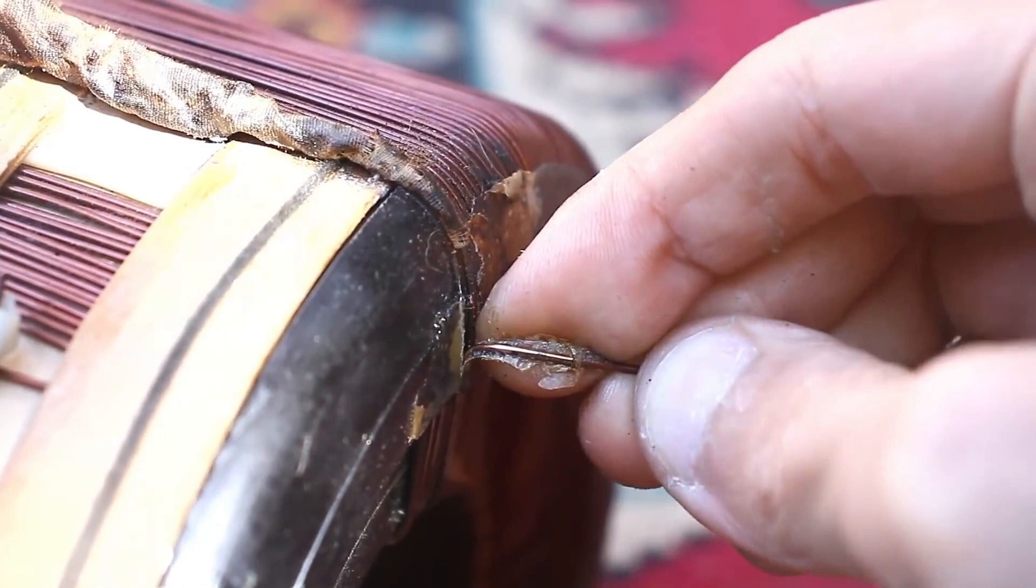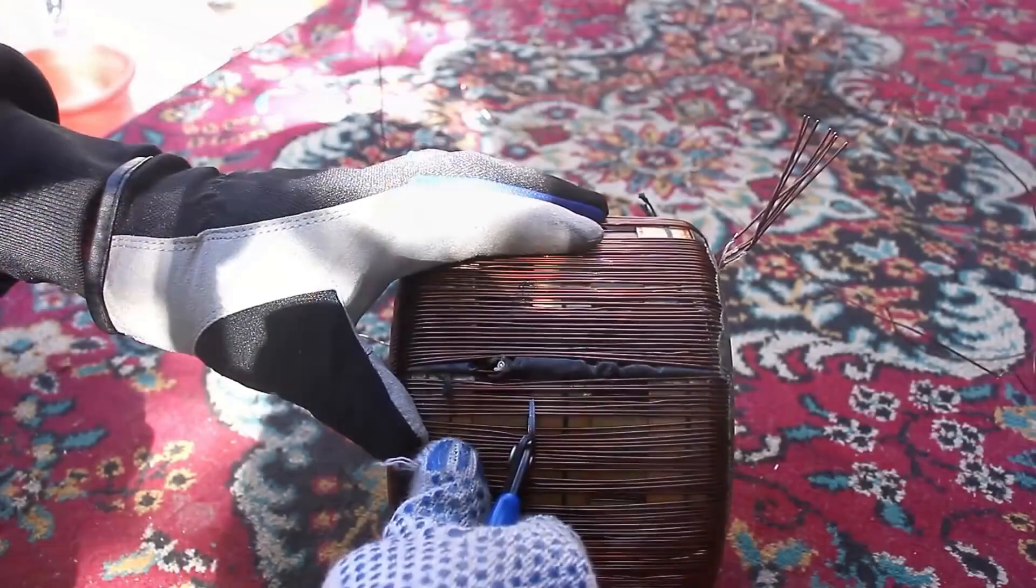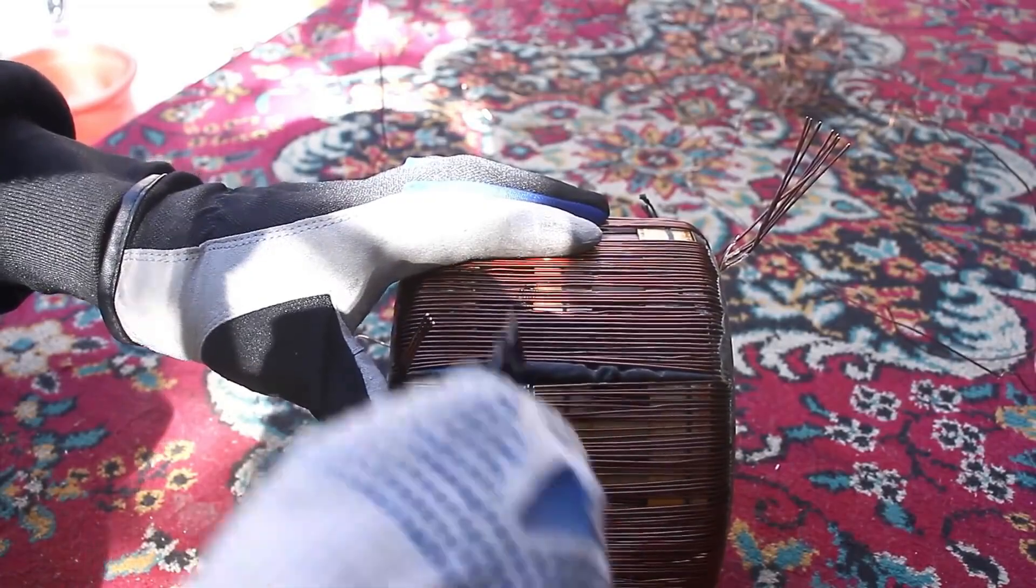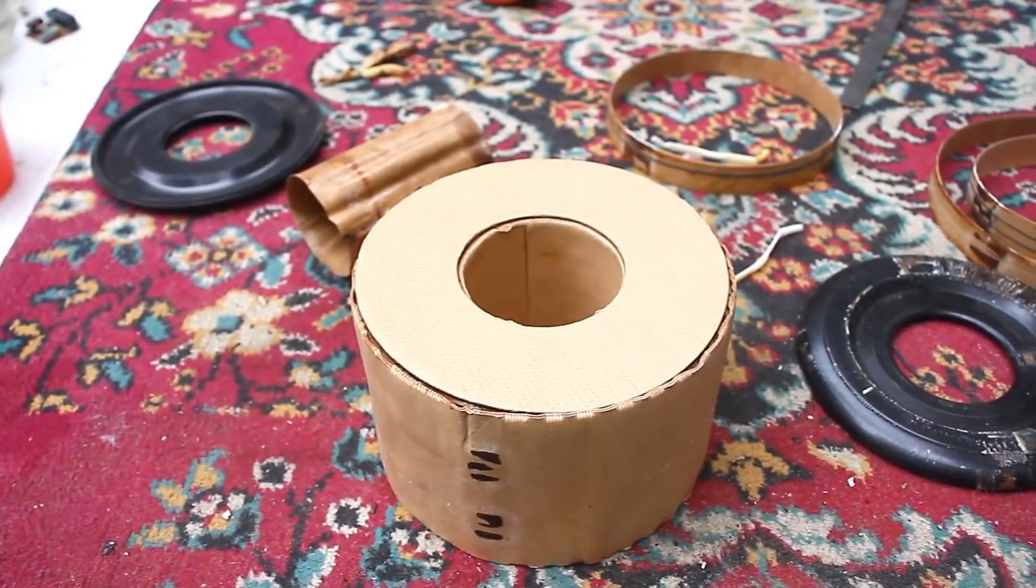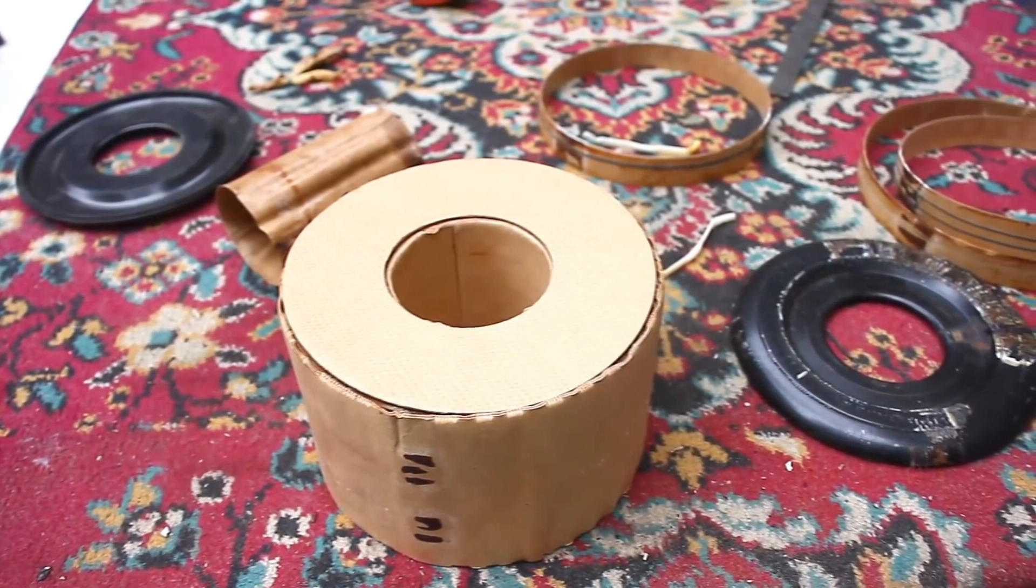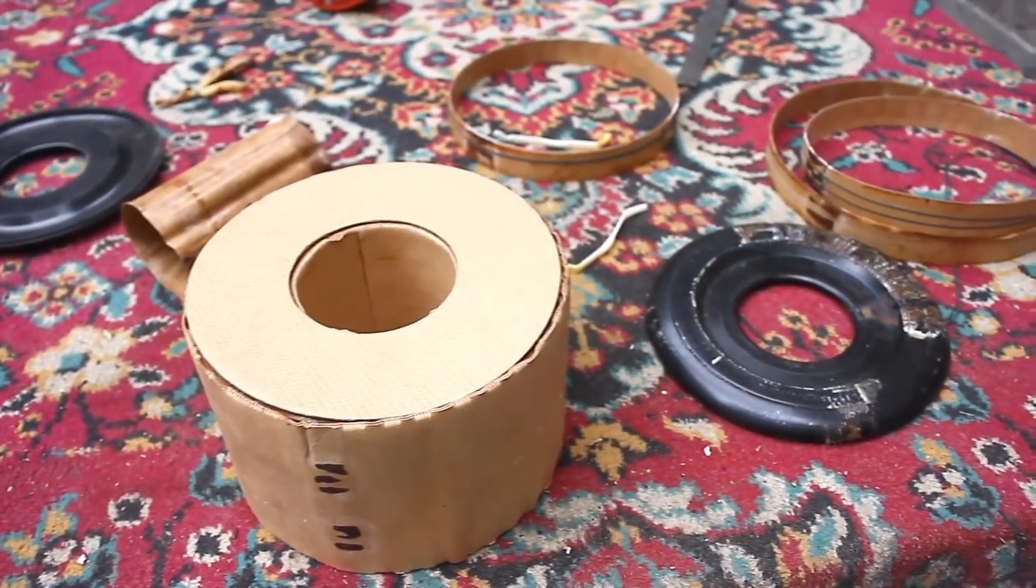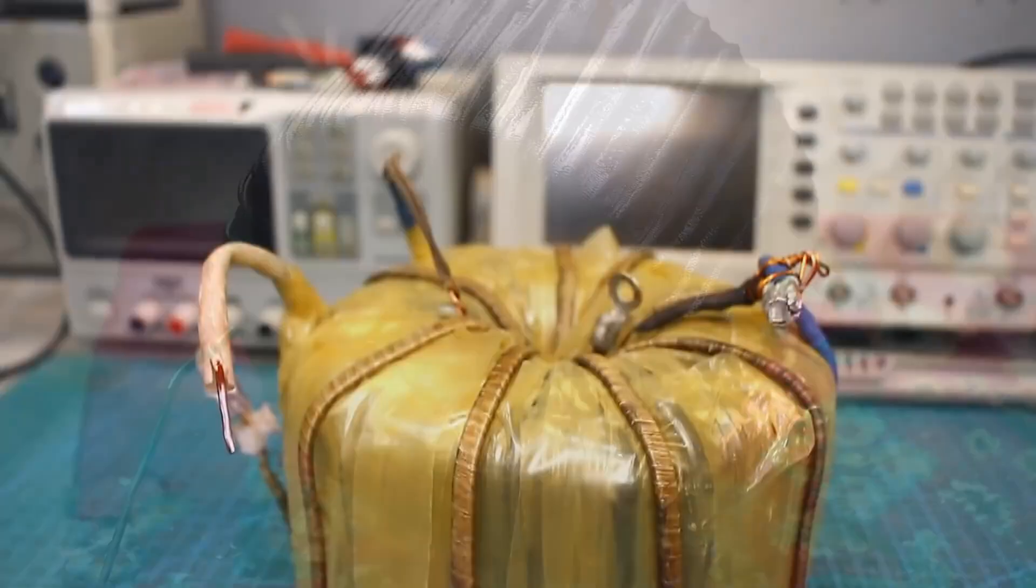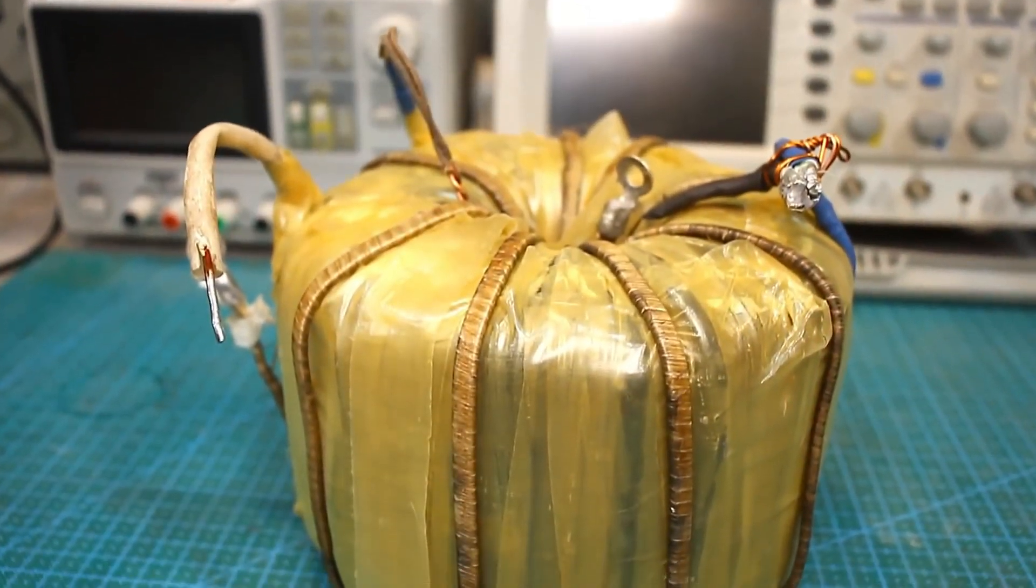The problem is that I've made manual arc welders, both transformer and inverter types, multiple times, but a semi-automatic welder, that's a first for me. So, I have to study tons of information and come up with everything on the fly. One thing is clear, when all this is done, I'll have a homemade semi-automatic welder with good characteristics.